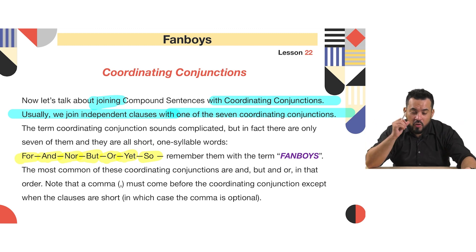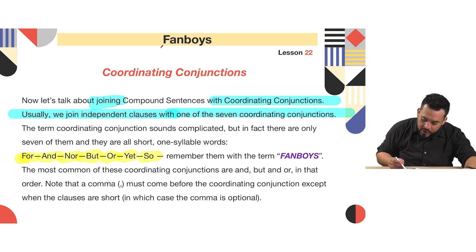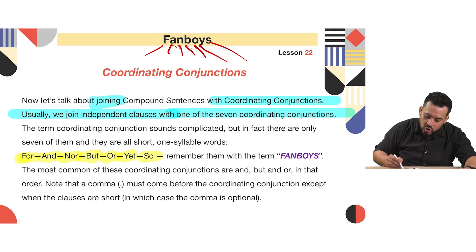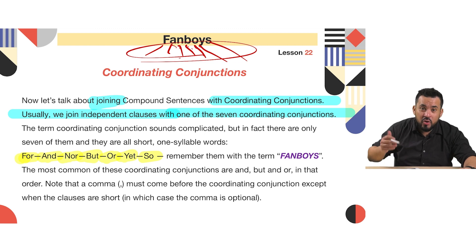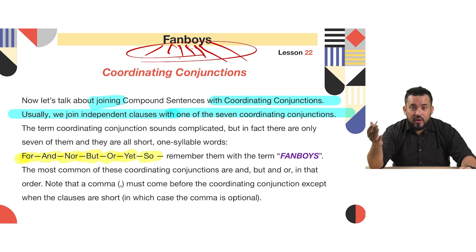So instead of saying 'coordinating conjunction,' we can just say FANBOYS. Where does the name come from? F for 'for,' A for 'and,' N for 'nor,' B for 'but,' O for 'or,' Y for 'yet,' S for 'so.' This will help us remember those seven coordinating conjunctions — an easy way is by just remembering the word FANBOYS.